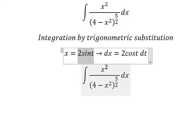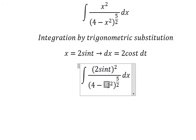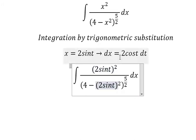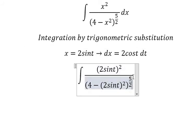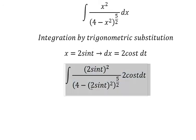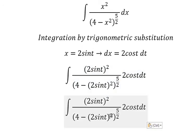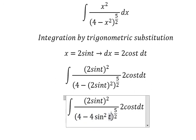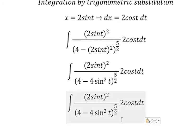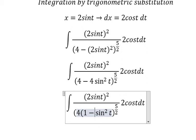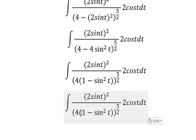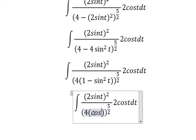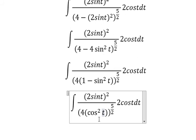So I will substitute this in. We have 4sin²(t) and we can do factorization. We know that one minus sin²(t) equals cos²(t) — this is a trigonometric identity.